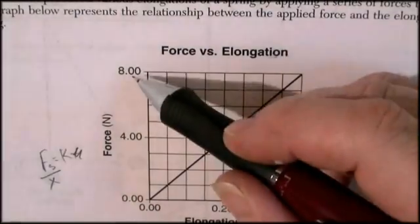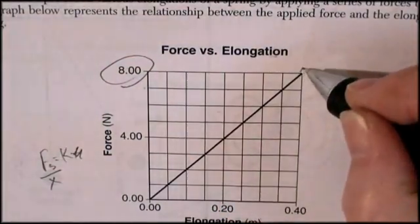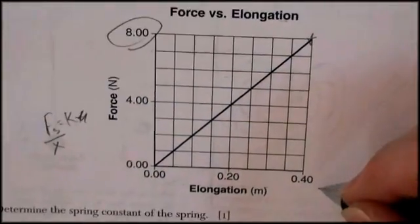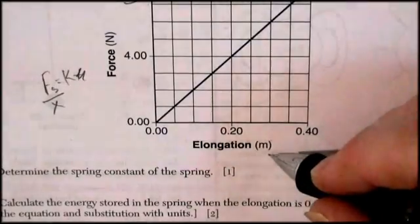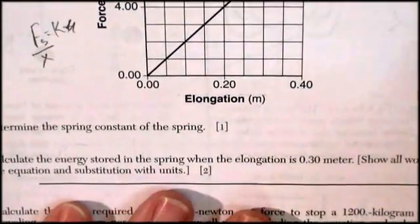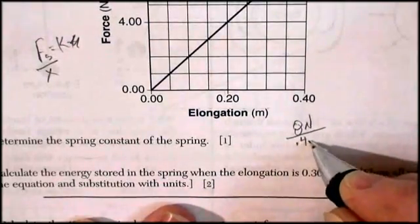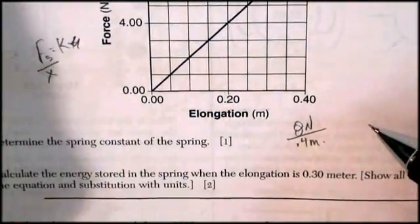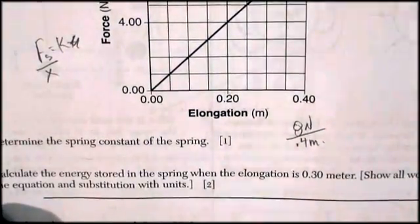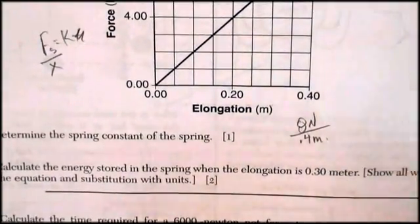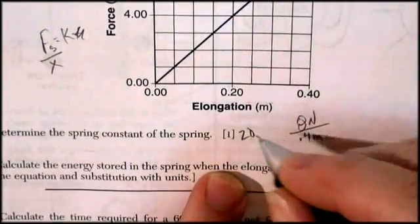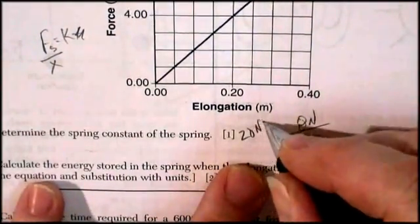So I can just look at my graph and say I'm going to pick the biggest numbers because that's always the best way. Eight Newtons, and that corresponds with 0.4 meters. So it's only worth a point, so it really doesn't need to see the work. So eight Newtons divided by 0.4 meters gives me 20.